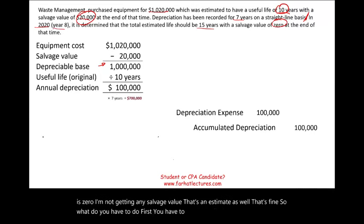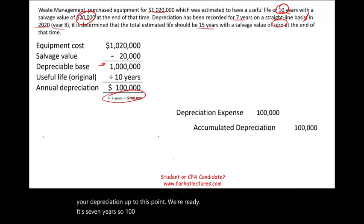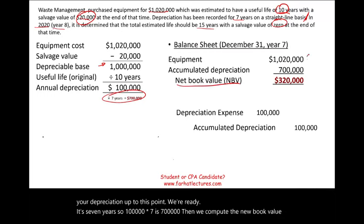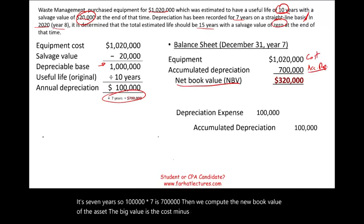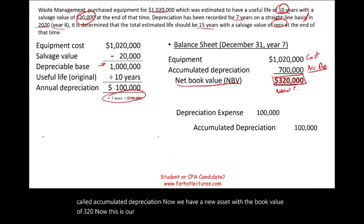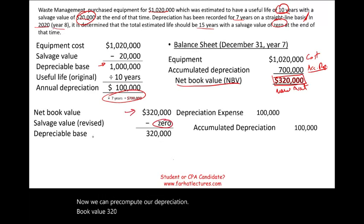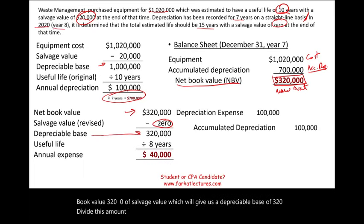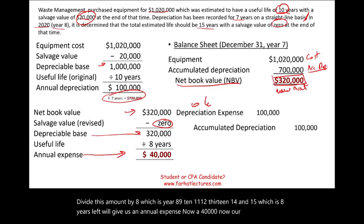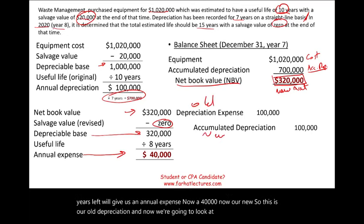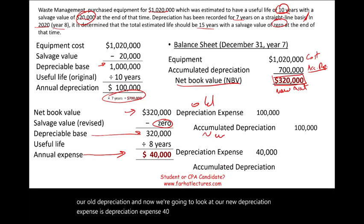We compute all depreciation up to this point: $100,000 × 7 years = $700,000. The new book value is cost minus accumulated depreciation: $1,020,000 − $700,000 = $320,000. This asset now has eight years of useful life remaining with no salvage value. New depreciable base is $320,000 ÷ 8 years = $40,000 annual depreciation. So our new depreciation expense is $40,000 and accumulated depreciation is $40,000 — we cut our depreciation by more than half, from $100,000 down to $40,000.